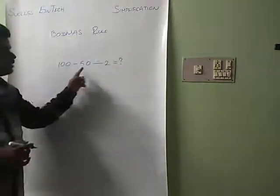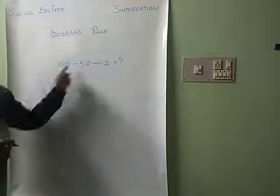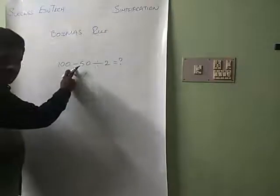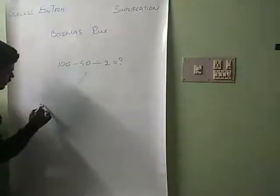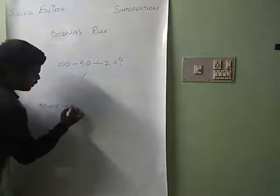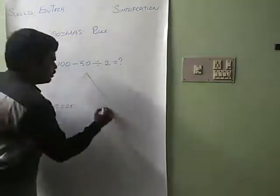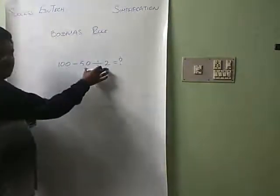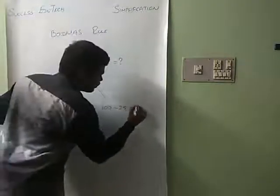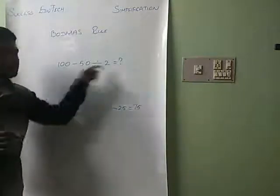What is the value of this expression? There is a minus operation and a division operation, giving two possibilities depending on which operation you do first. If you subtract first, you get 100 minus 50 equals 50, then divide by 2 to get 25. But if you divide first, you get 50 divided by 2 equals 25, then 100 minus 25 gives 75.